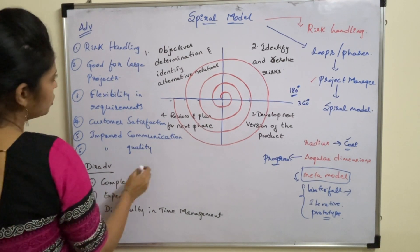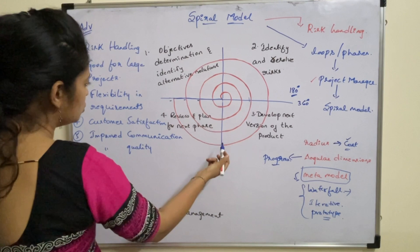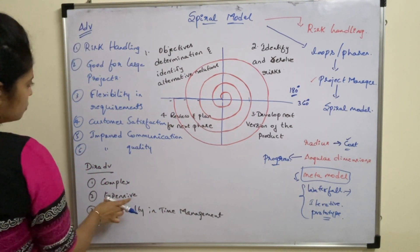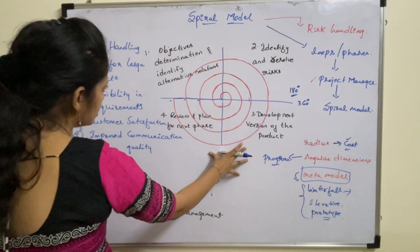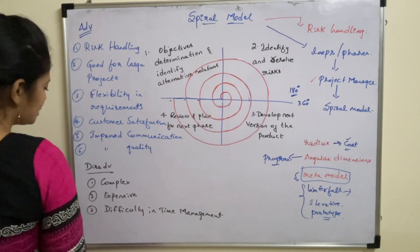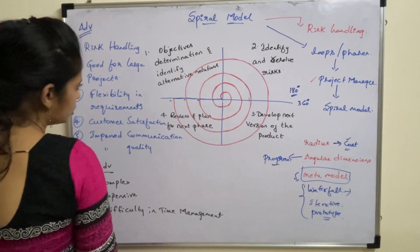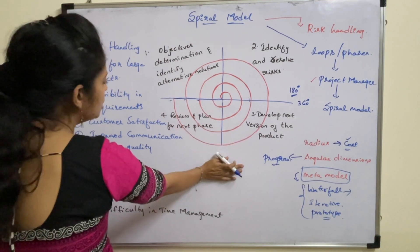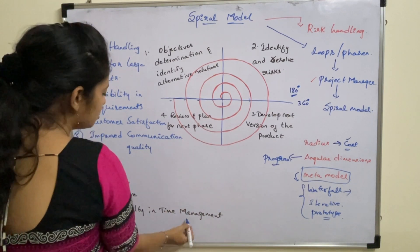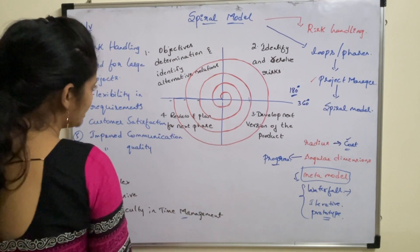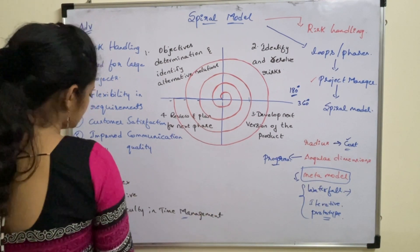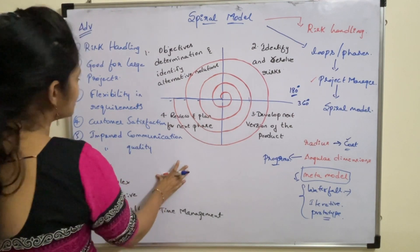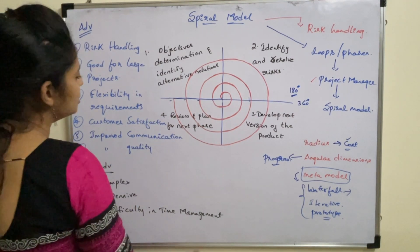The disadvantages of the spiral model are: first, it is a very complex model because the number of phases or loops is unpredictable for complex projects. Second, it is expensive and not suitable for small projects. Third, difficulty in time management — since the number of phases is not known at the beginning, it is not possible to estimate how much time is required to complete the project.